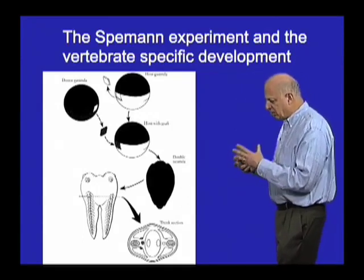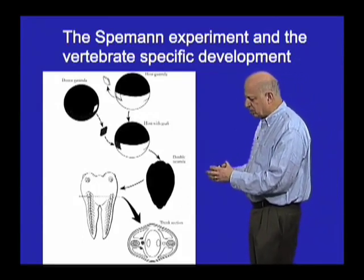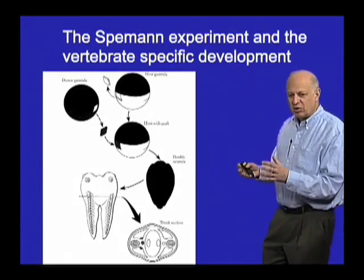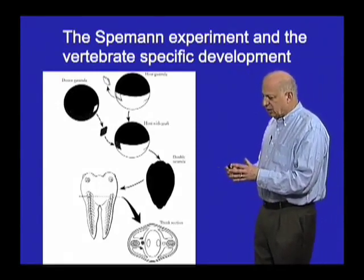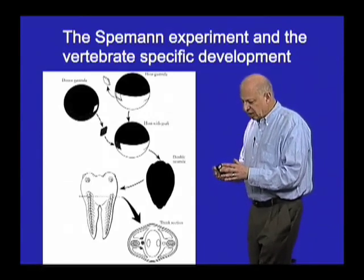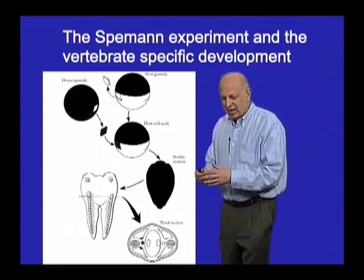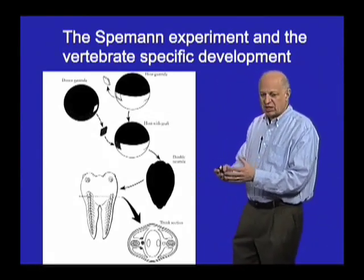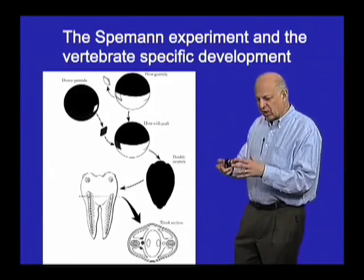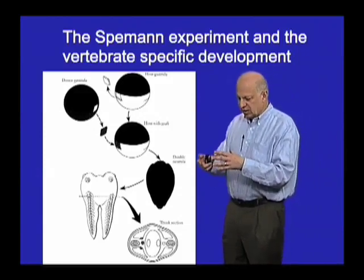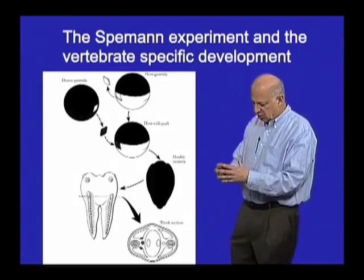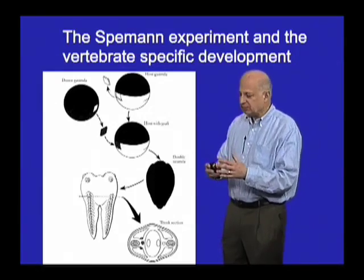So that seemed to suggest the transplanted tissue must have been very, very special. We actually now know that though it is special, it really is special in eliciting an existing response from the surrounding tissues, which are normally repressed from forming the body axis. So the body axis could form anywhere, and this is a local region of de-repression.